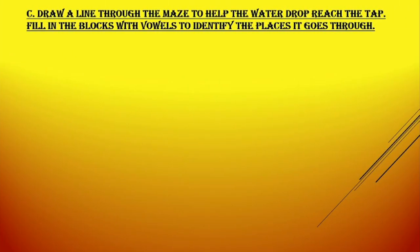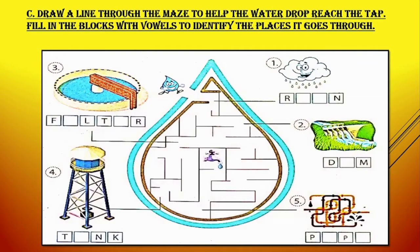Draw a line through the maze to help the water drop reach the dam, filling the blocks with words to identify the places it goes through. In this picture, number one is rain. From the rain, the water is being saved in a dam. The second one is dam. And after that, this water is sent for purification — the water is being filtered.